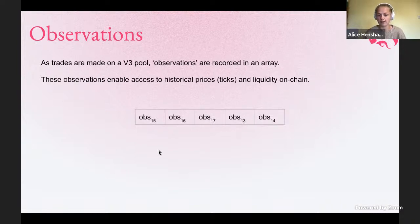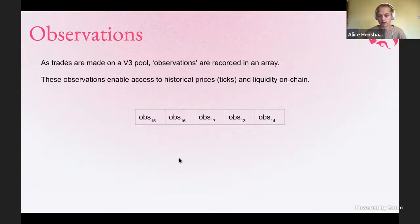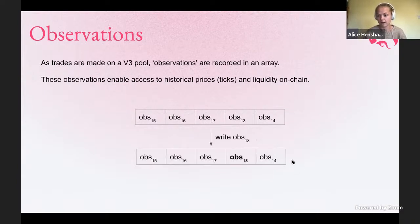The array looks something like this. Let's say the observations array had five spaces. We circle around overwriting previous values, so there's always the five most recent prices stored. So if you had observations 13 through to 17, and you wanted to write observation 18, it gets written into our pool contract over observation 13. You always have the five most recent observations.